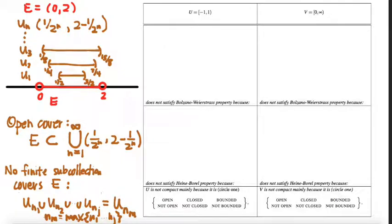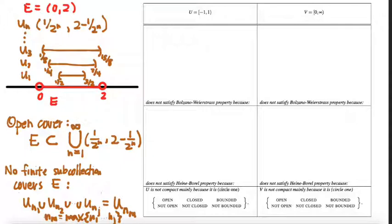So that's the Heine-Borel property in action. For this particular set E, we exhibited an open cover — a collection of infinitely many open sets whose union covers E — that has the property that no finite subcollection of those covers all of E. As Sophia points out, the reason we got dinged here is because E was an open set. You might imagine, based on the theorem in this section, that if we had used the closed interval from 0 to 2, we wouldn't have been able to do this. So your task on the group assignment is to show for one of two sets and one of two properties explicitly why that set doesn't satisfy the property you chose.